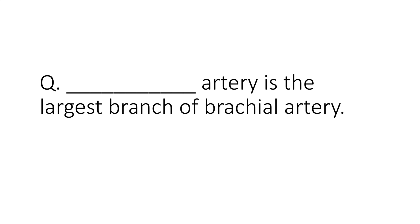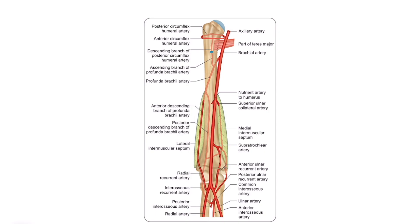Profunda brachial artery is the largest branch of brachial artery. In this image you can see the brachial artery and its branches. The axillary artery and brachial artery are the same artery — axillary continues as brachial artery after crossing the lower border of pectoris major muscle, where the name changes. Just after its commencement, the brachial artery gives its largest and longest branch, called the profunda brachial artery.